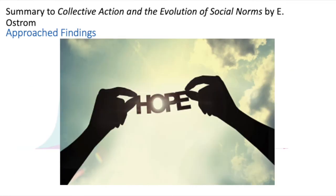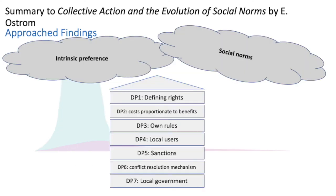Coming back to Ostrom's publication, she offers another approach giving us hope in managing common pool resources. Her findings show that our evolution contributes to the fact that we tend to act collectively. We often decide by intrinsic preferences — also called the indirect evolutionary approach — and also through social norms like keeping a secret or telling the truth, which we have learned to influence collective actions in a positive way.